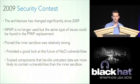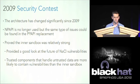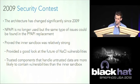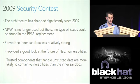Even though the architecture has changed significantly since 2009 — NPAPI is gone, Pepper has replaced it — the 2009 security contest provided a good look at the future of Native Client vulnerabilities: fewer inner sandbox breakouts, more vulnerabilities in things like the Pepper proxy handling untrusted data. That's very much held true to this day.